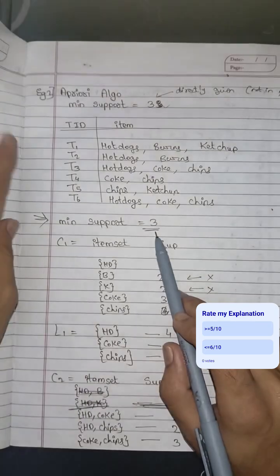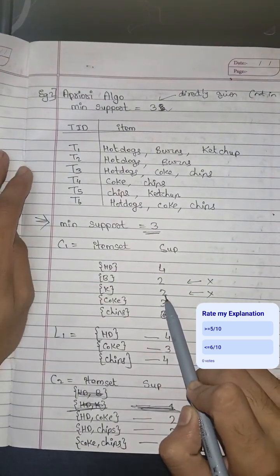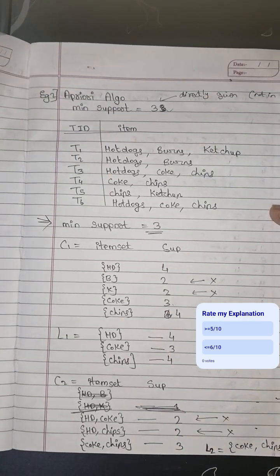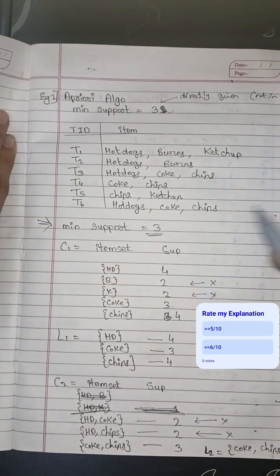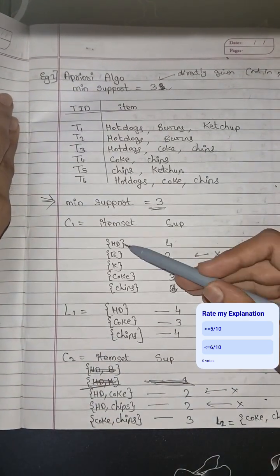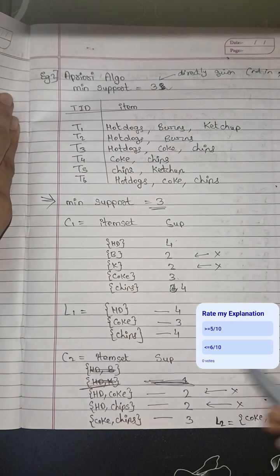And support is 3, so we will reject 2 and 2. Minimum should be 3. Minimum time element is present should be 3. So the L1 is HD, that is hot dogs, Coke, and chips.